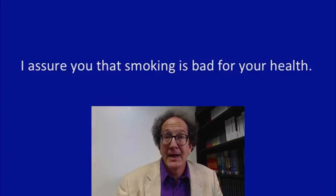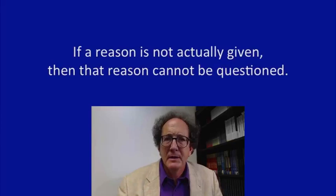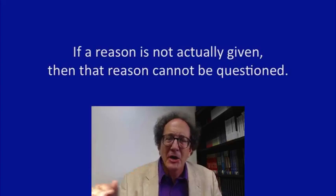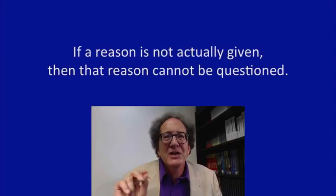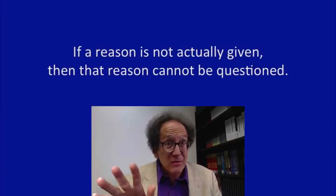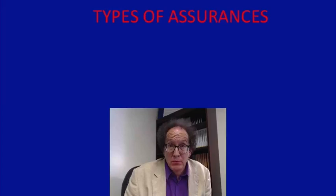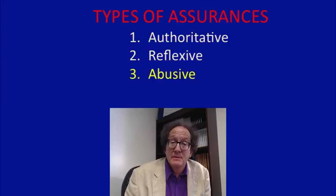So what good is that? It's a lot of good. Because if I don't give the reason, you can't question the reason. If I simply say everybody believes it, it's certainly true, then you can't ask whether those people who believe it have any reason to believe it, or whether I have any reason to be so certain. If I don't give the reason, I've cut off your attack on the reason I would give. So assuring is kind of tricky — if you can trust me, that's fine; but if you can't, you should be asking what kind of reason I really have. There are three kinds of assurance we're going to look at: authoritative, reflexive, and abusive.